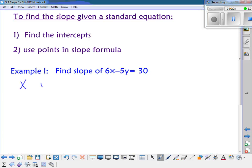I can use my x-y table with the zeros to figure out the two intercepts. So if y is 0, I end up with 6x equals 30. So what's x going to be? x would be 5.